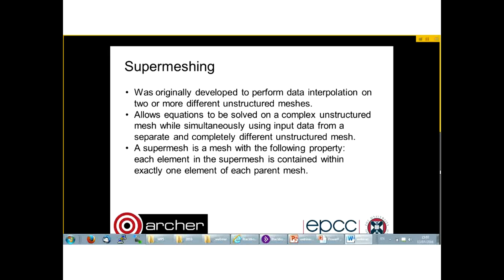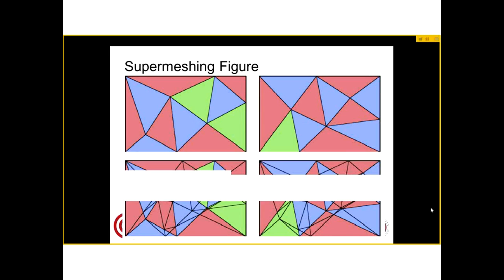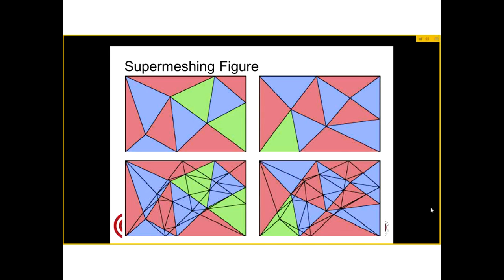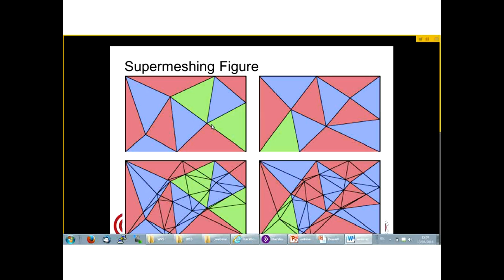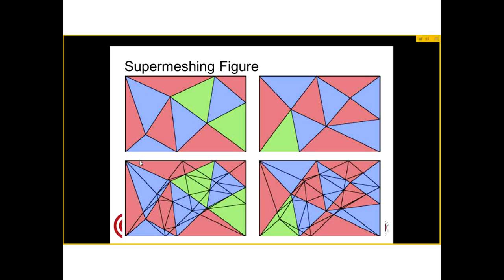For instance, the immersed body method and fluid-solid interactions are two cases that cannot be solved with the existing algorithms. The main property of a supermesh is that each element of the supermesh is contained within exactly one element of its parent mesh. For example, here we have two meshes, Mesh A and Mesh B. Mesh A is in the top left corner and Mesh B is in the top right corner. The supermesh of Mesh A and B is shown in the bottom left corner, where we can see the original Mesh A with the same coloring, and in black and white the new elements created based on the input of Mesh B.